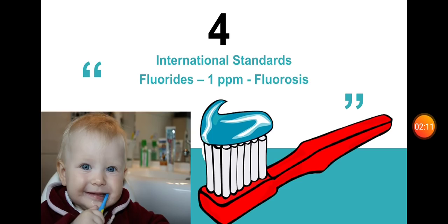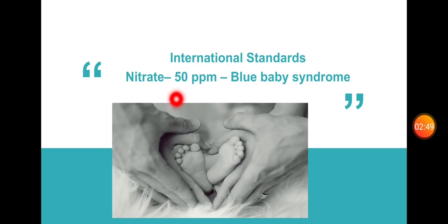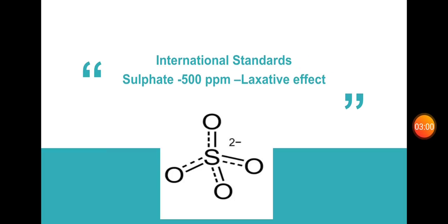International standards of drinking water: the maximum allowed fluoride is 1 ppm. Excess fluoride causes fluorosis. Excess fluoride is also found in toothpaste. For lead, the maximum permissible limit is 50 ppb (parts per billion), as lead affects the central nervous system. Another contaminant has a maximum permissible amount of 500 ppm, which causes loosening of the stool.